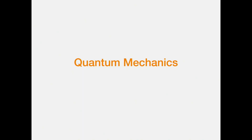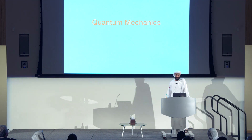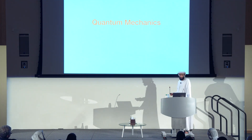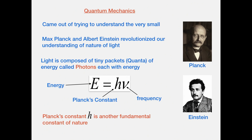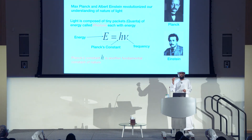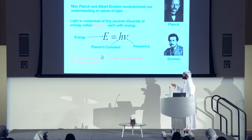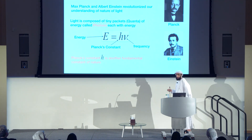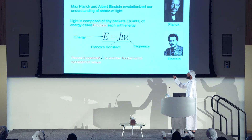That's all I had about space time. Now let me transition to quantum mechanics — I'm going to say a few things that you're not going to understand, or maybe you will understand but you won't believe me. Quantum mechanics came about trying to understand the very small. Max Planck and Albert Einstein revolutionized our understanding of light: the light that comes out of your screen is actually composed of tiny packets of energy called photons, each with energy equal to h — Planck's constant, another fundamental constant of nature — times the frequency of that light. The word 'quantum' comes from 'quanta,' meaning packet.